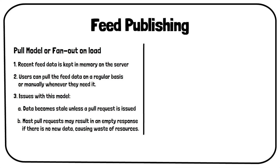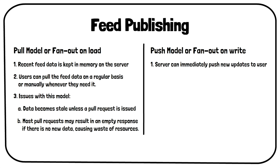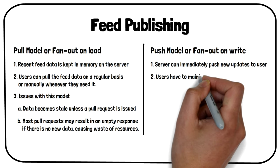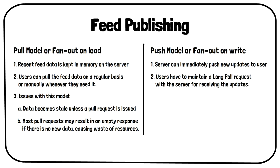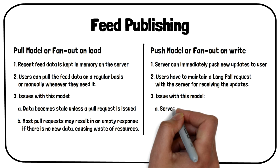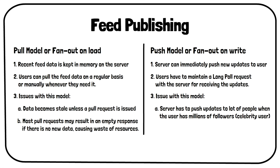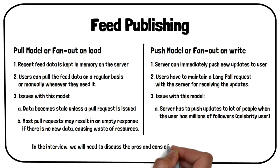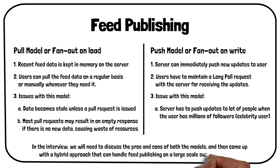The second approach is the push model, also known as fan-out on write. In this approach, the server can immediately push new updates to the user. To accomplish this, users will have to maintain a long pull request with the server for receiving new updates. However, there is one potential issue: the server will have to push updates to a lot of people when the user has millions of followers, which can use a lot of resources and overwhelm our service. This is known as the celebrity user issue. In the interview, we will need to discuss the pros and cons of both models and then come up with a hybrid approach that can handle feed publishing on a large scale such as Facebook.